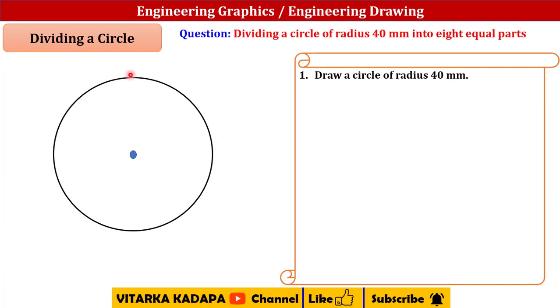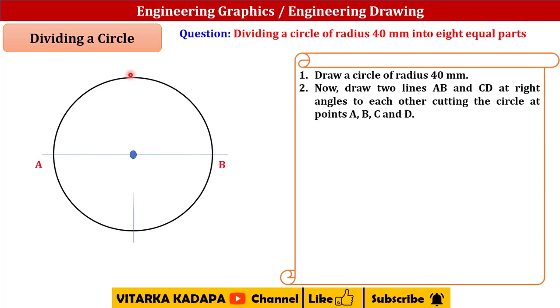Now draw two lines AB and CD at right angles to each other. I will take one line like this, AB, and I will take one line as a vertical line CD which are going to meet at the center, A to B and C to D.